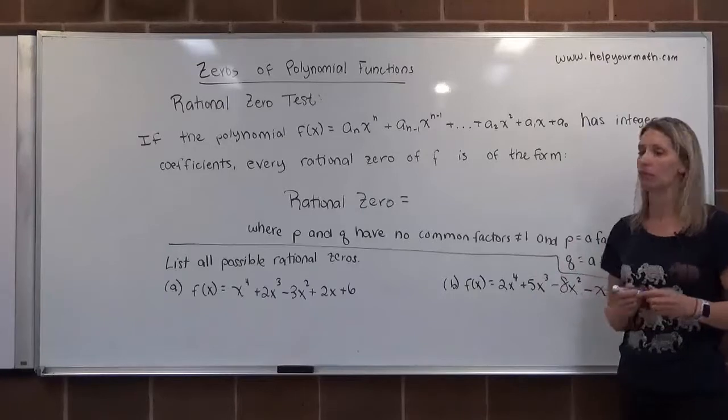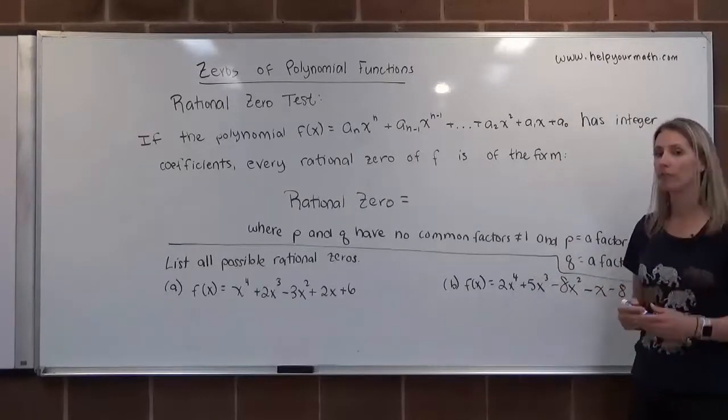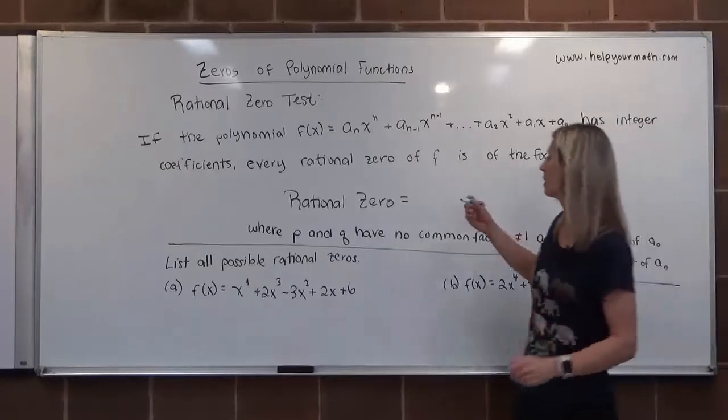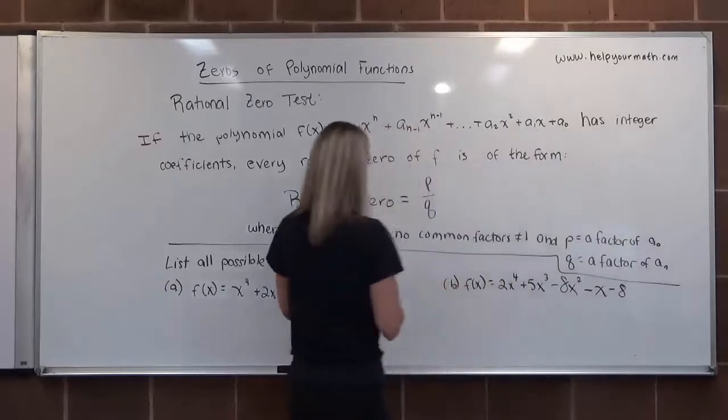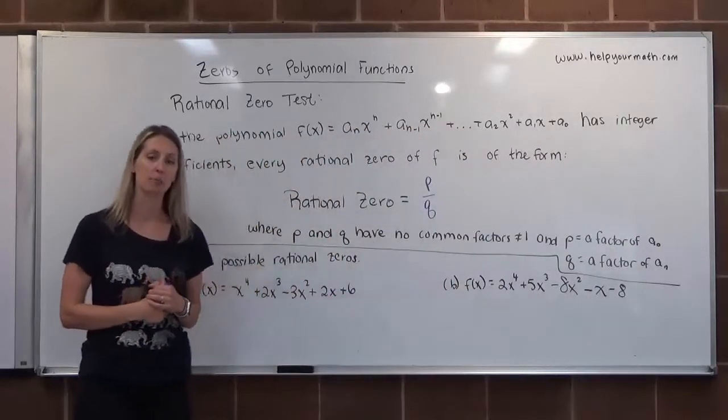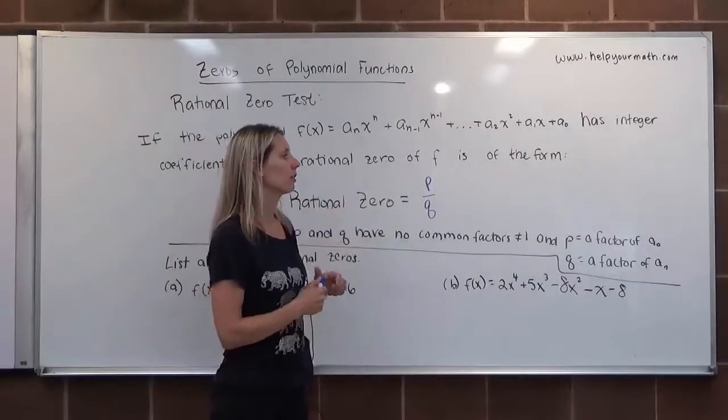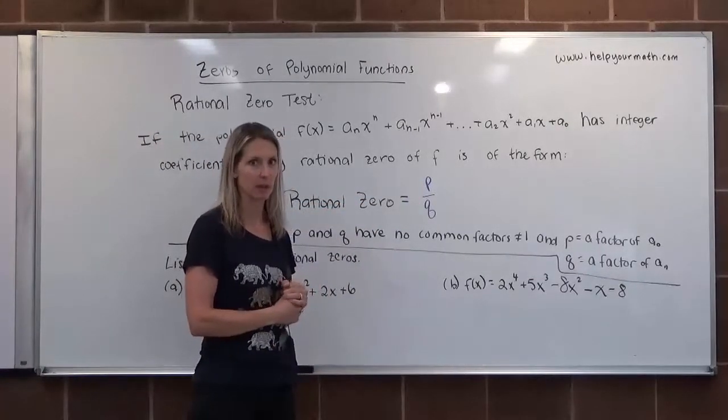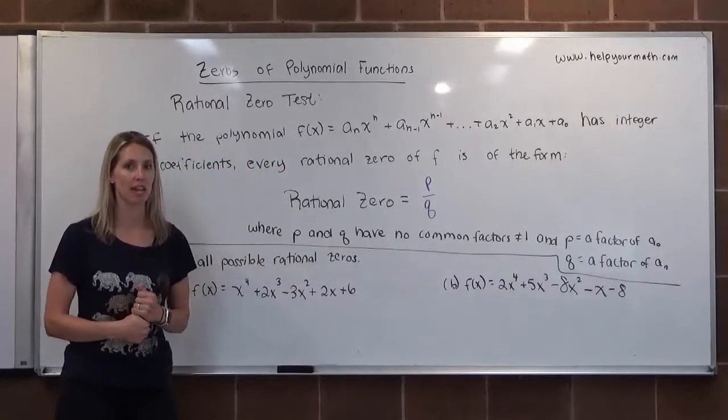So if F, the function F, has any rational 0s, they would all have to be of the form P over Q. And let's define what P over Q means in this case. So where P and Q have no common factors besides 1, but also P is any factor of the constant term A sub 0, and Q is any factor of the leading coefficient A sub N.